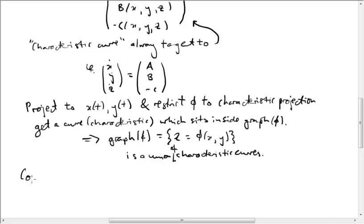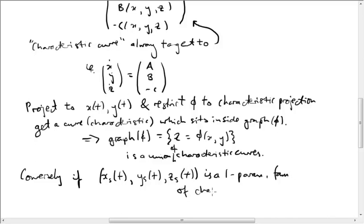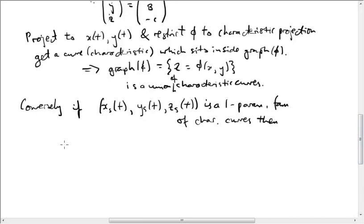Okay, and conversely, if, say, we take a one parameter family, depending on some parameter s, so x of t sub s, y sub s of t, z sub s of t, if we take a one parameter family of characteristic curves, then, well, we take their union, so we consider all points s and t going to the point x of s of t, y sub s of t, z sub s of t, in R3.